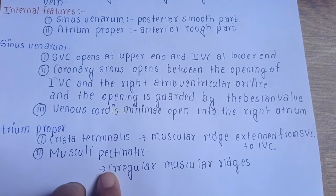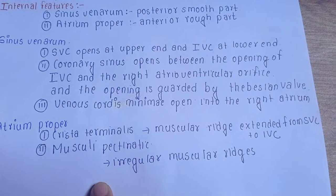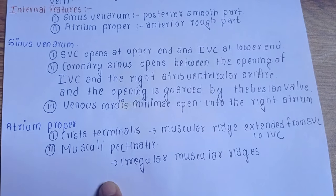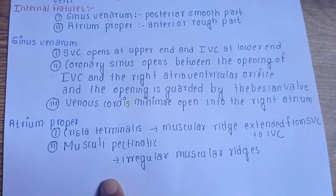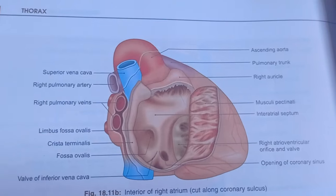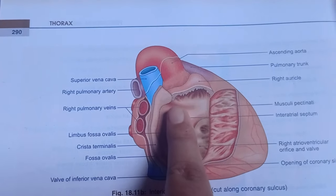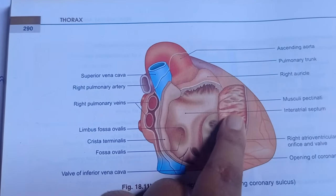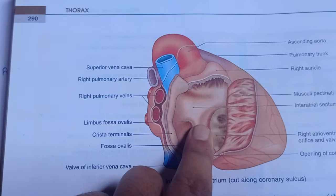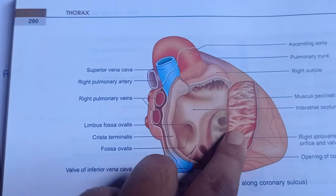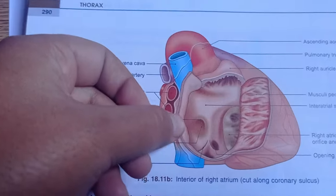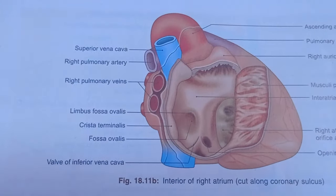Another structure is the musculi pectinati. These are irregular muscular ridges present in the anterior rough part of the right atrium. As shown in the figure, the posterior smooth part is the sinus venarum and the anterior rough part is the atrium proper. The crista terminalis can also be seen here, separating the two parts.